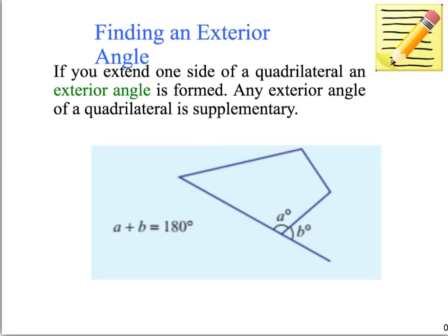As with triangles, quadrilaterals have exterior angles, and those exterior angles are also supplementary like they are with triangles — they add to 180 degrees. As you can see in this diagram, angle A and angle B, the exterior angle and the interior angle, both add to 180 degrees.